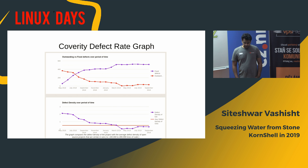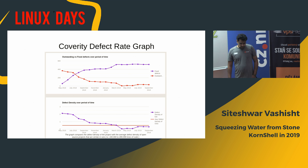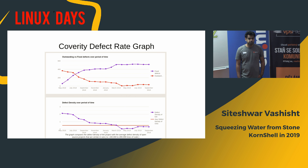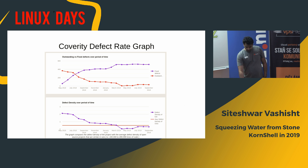This is our Coverity defect rate graph. Coverity is a static analysis service. When we started running Coverity in early 2018, our defect rate was about 2. Now it fluctuates between 0 and 0.5 — around 0.3 to 0.4 — which is a decent improvement.